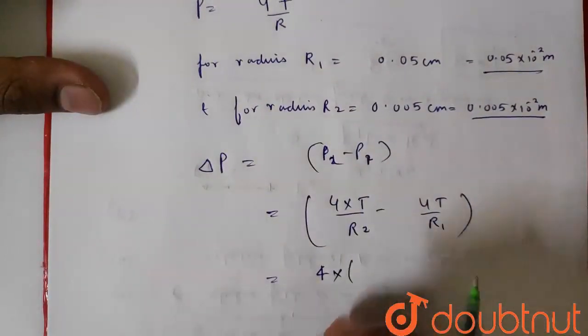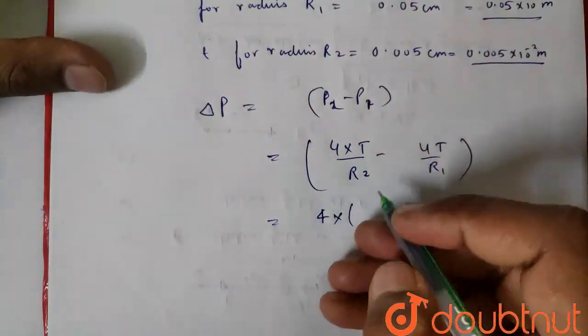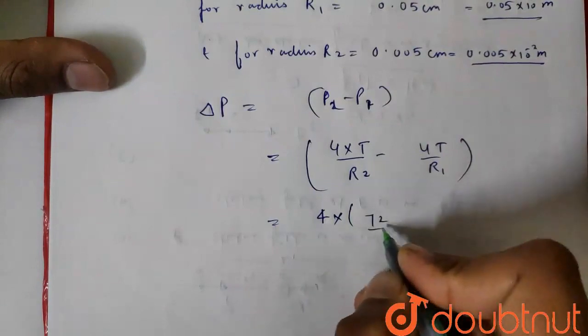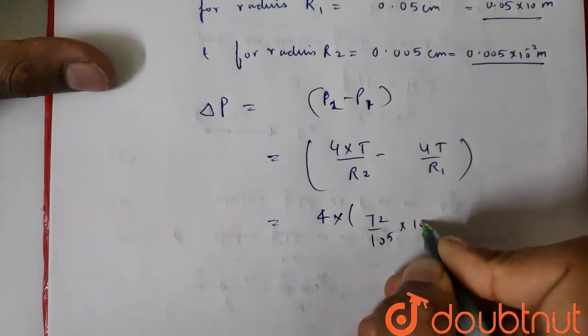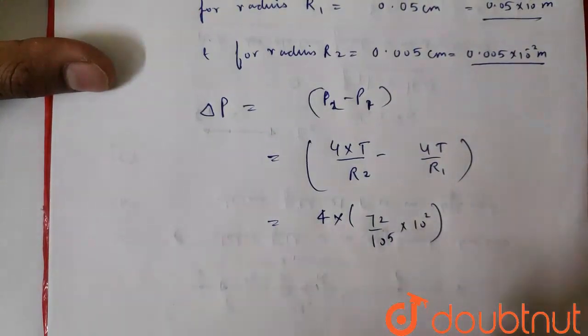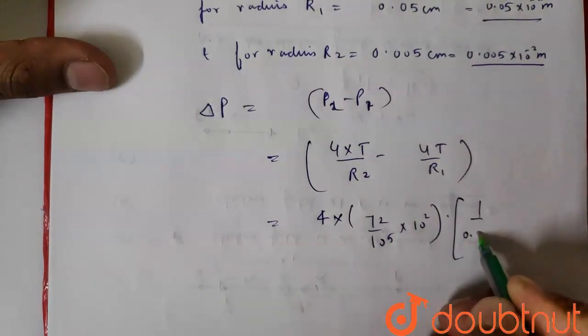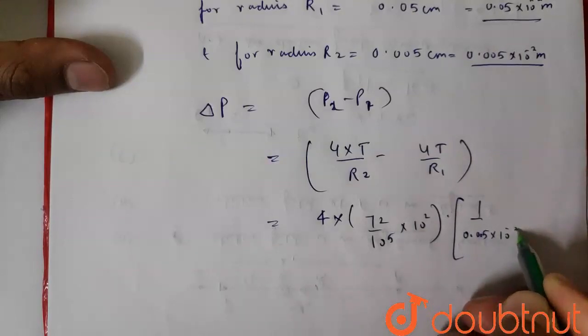It will give us 4 times surface tension, 72 upon 10 to the power 5 times 10 to the power 2, times the difference 1 by r2 minus 1 by r1, where the radii are 0.05 and 0.005 times 10 to the power minus 2.